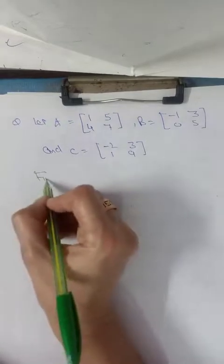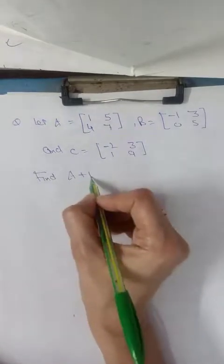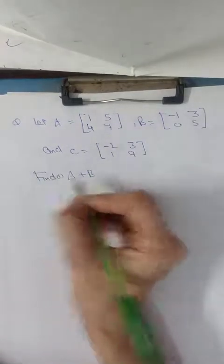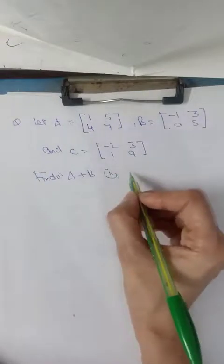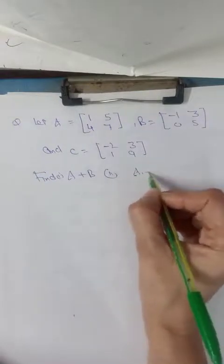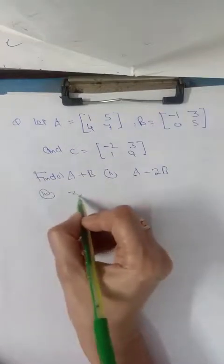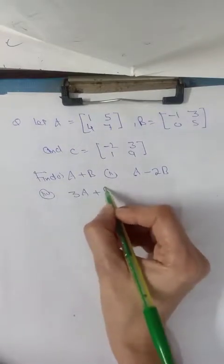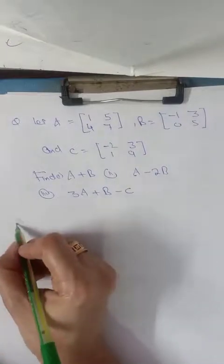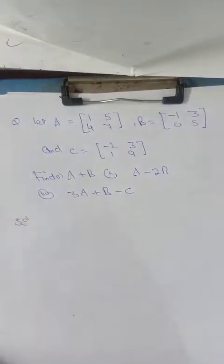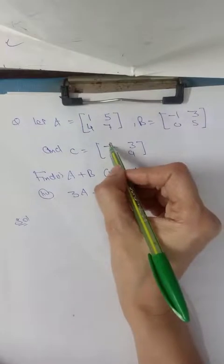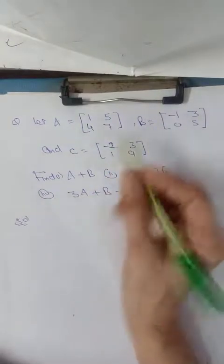Then find: matrix A plus matrix B, first part. Second part, matrix A minus 2B. Third part, 3A plus B minus C. So today we have told you that we can add and subtract matrices of the same order.